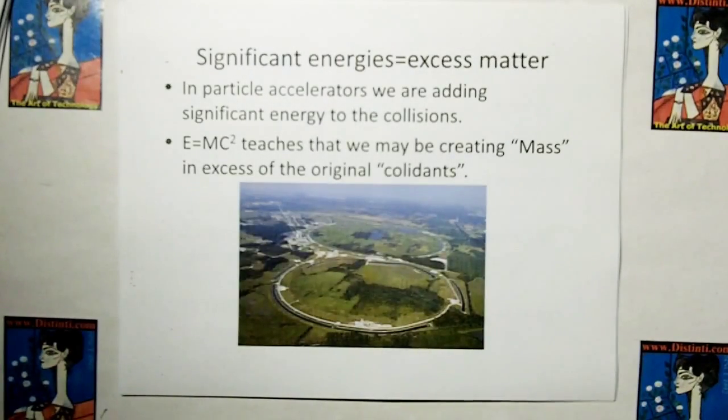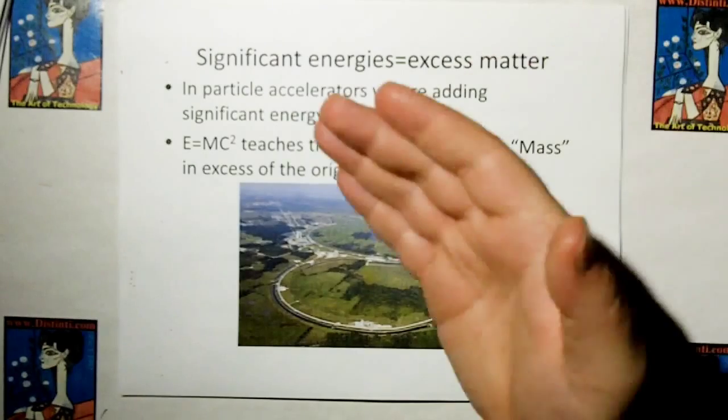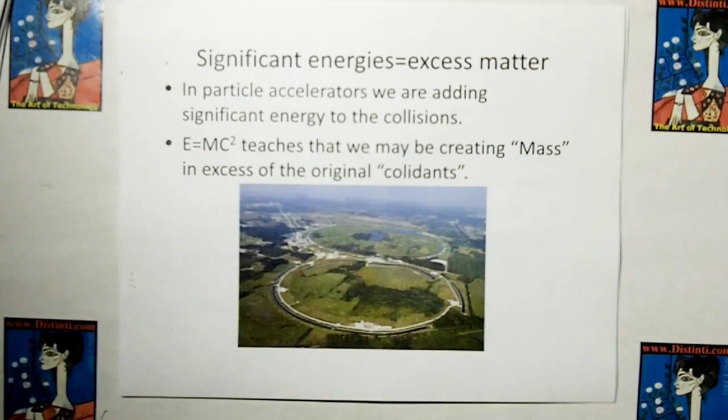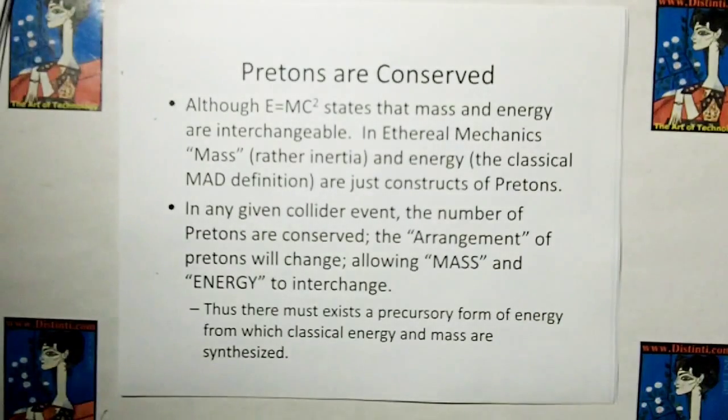And the other problem with particle accelerators is because you're adding significant energies, you could create excess matter that wasn't there to begin with. In particle accelerators, we're adding significant energy to the collision. E equals MC squared teaches that we may be creating mass in excess of the original collidants. But in ethereal mechanics, pretons are conserved.